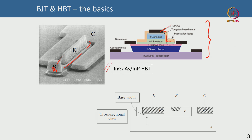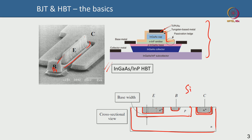Compound semiconductor HBTs have vertically stacked layers. But in silicon or silicon germanium, you do not have such vertical stacking — it is pseudo-lateral. The emitter, base, and collector are in the same plane. You have an n-type emitter, a p-type well for the base, and a deep n-type well for the collector. This is a simplistic view, but it illustrates the key structural difference between compound semiconductor and silicon/SiGe bipolar devices.